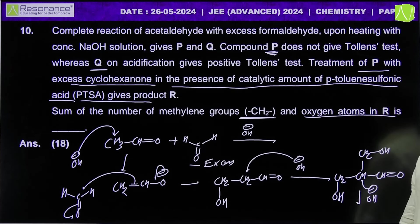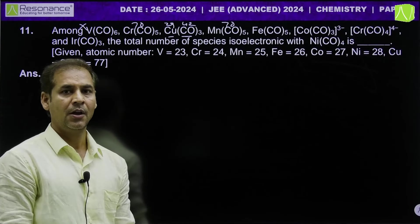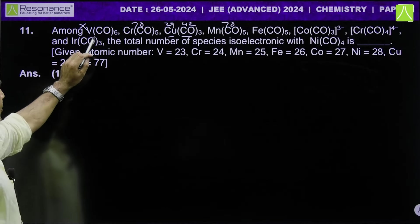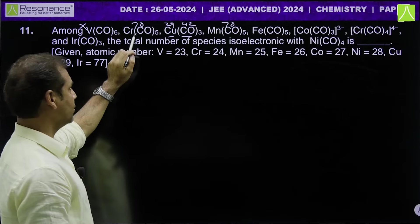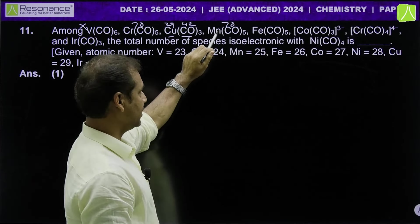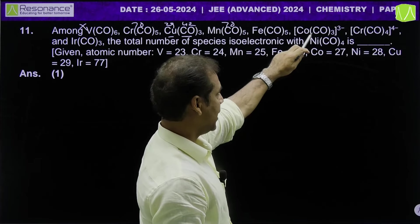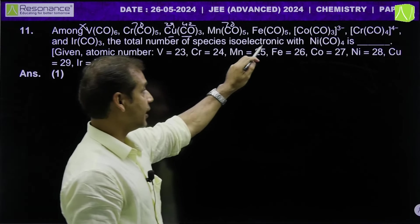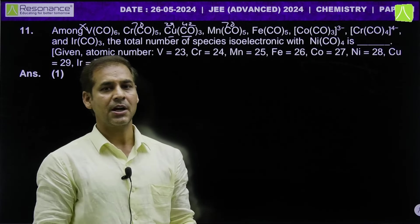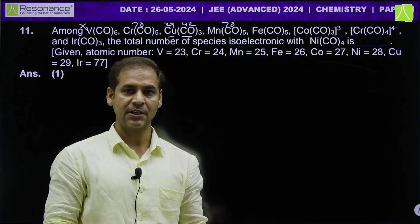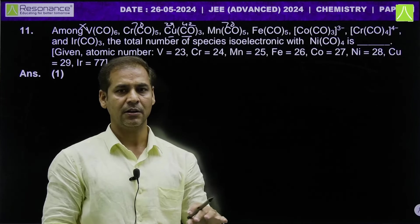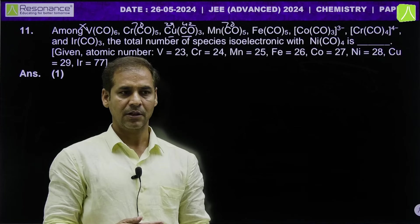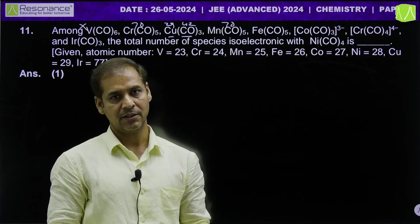Let's come to the next question. Among VCO6, Cr(CO)5, Cu(CO)3, Mn(CO)5, Fe(CO)5, and an ionic complex — the total number of species isoelectronic with NiCO4. This question is designed to waste your time with small calculations, but we can solve it smartly.